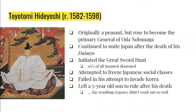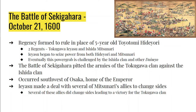After his death, Hideyoshi left a young son named Hideyori who was supposed to be the new Shogun, but he was only five years old. A regency was formed where advisors would rule the country until Hideyori was old enough. This regency failed, leading to the Battle of Sekigahara on October 21st, 1600. The two regents were Tokugawa Ieyasu and Ishida Mitsunari. Ieyasu began to seize power from Ishida and Hideyori, and eventually the Ishida clan and the Toyotomi clan banded together to challenge him, leading to that battle.